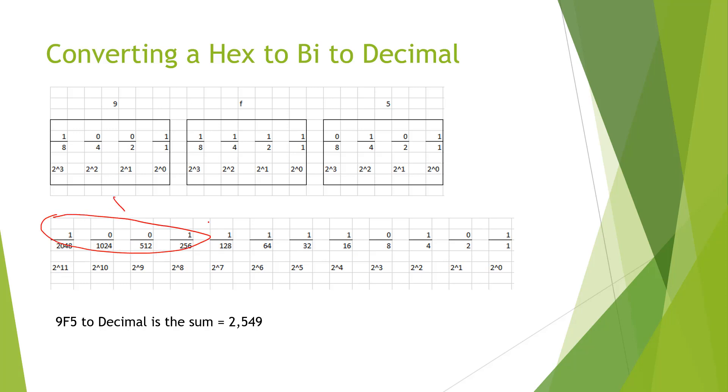These 4 bits came from here. These 4 bits came from here. These 4 bits came from here. We take 1001, 1111, 0101. That's what we did down here.